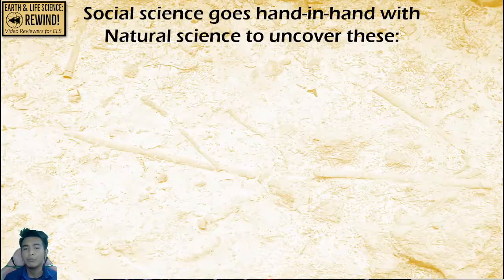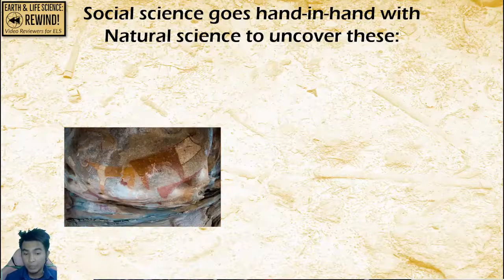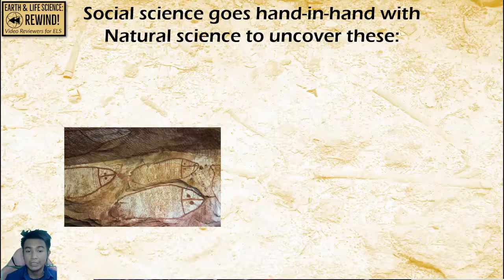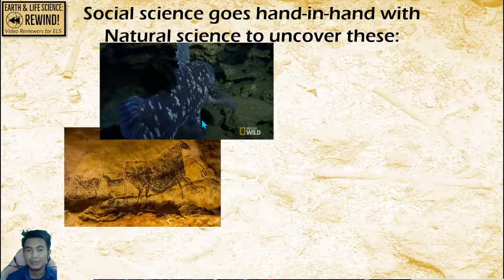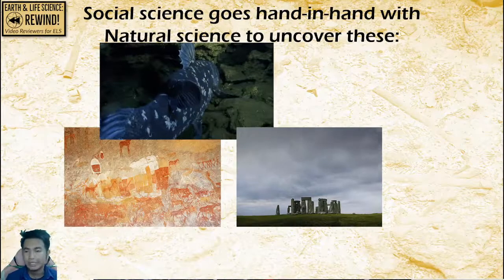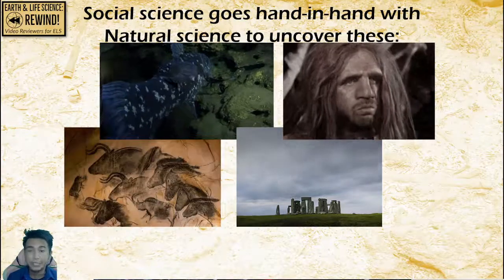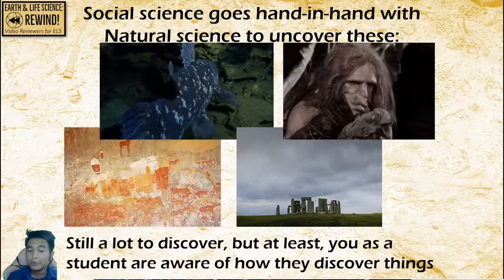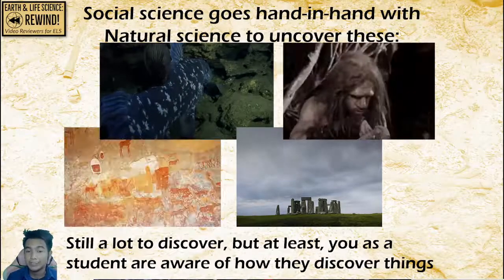So how do we apply these fossils and dating concepts to more practical aspects of science? Social science goes hand-in-hand with natural science to uncover these problems and issues — how far away were the primitive human civilizations, what organisms that are the same age as dinosaurs still exist, what human mysteries remain, and other questions we have regarding our prehistoric past. Still a lot to discover, but at least you as a student are aware of how they discover things.